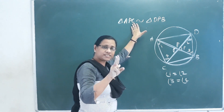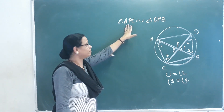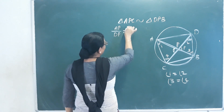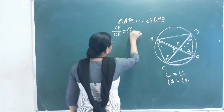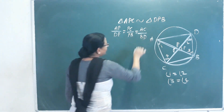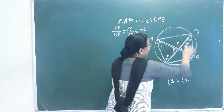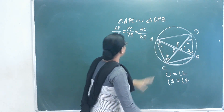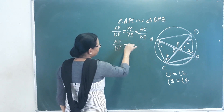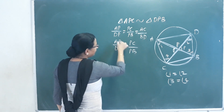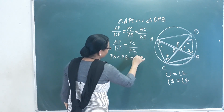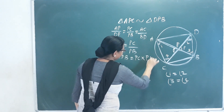Since the two triangles are similar, their sides are proportional. We write: AP/DP = PC/PB = AC/BD. Taking the first ratio, AP/DP = PC/PB. Cross multiplying: PA × PB = PC × PD.